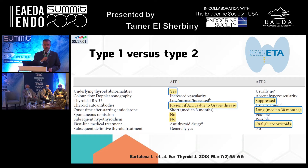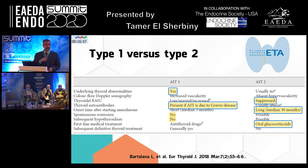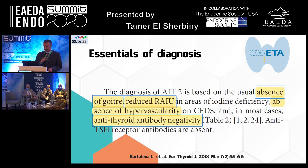If you perform Doppler ultrasound and find no hypervascularity, think of type 2. If the radioactive iodine uptake is suppressed, think of type 2. Usually antibodies are negative. It may require a long duration — up to 30 months — to develop. Resolution is the rule; patients may develop hypothyroidism after thyrotoxicosis. The main line of treatment is glucocorticoids. You diagnose type 2 if there is no goiter, no hypervascularity, suppressed radioactive iodine uptake, no autoantibodies, and no TRAbs.